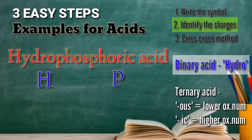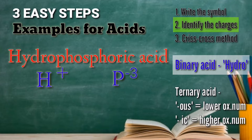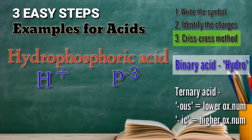Let's have the second step: identify the charges of the elements. Hydrogen is positive 1, and phosphorus is negative 3. You can find these values in your periodic table if you are not familiar with the oxidation numbers. Now let's proceed with the third step: perform the criss-cross method.